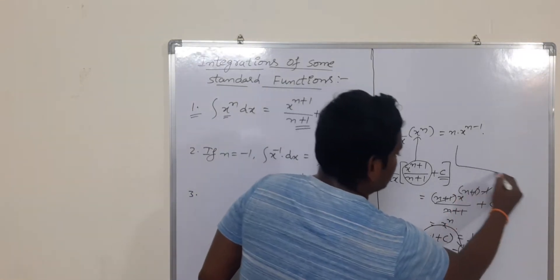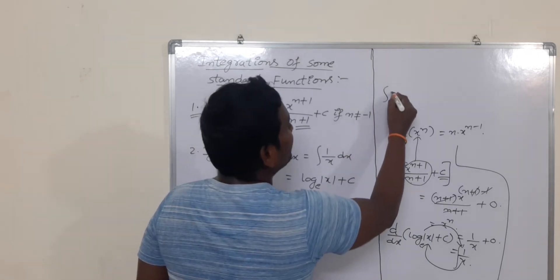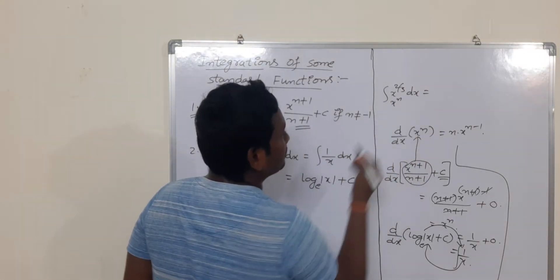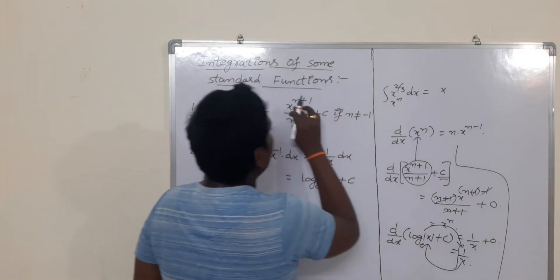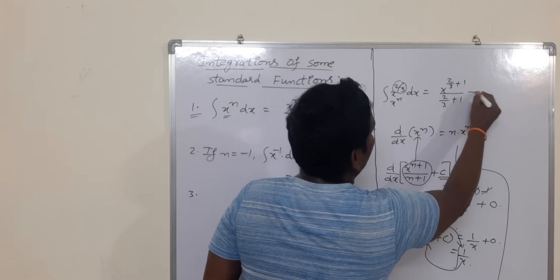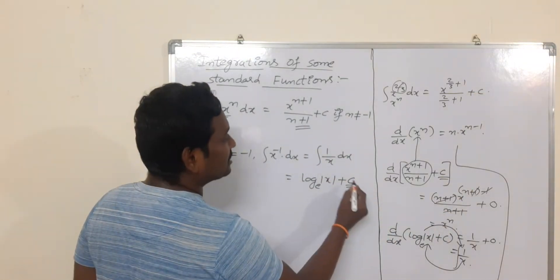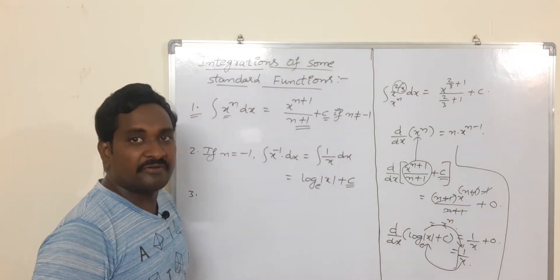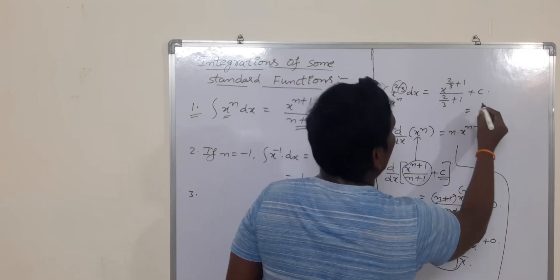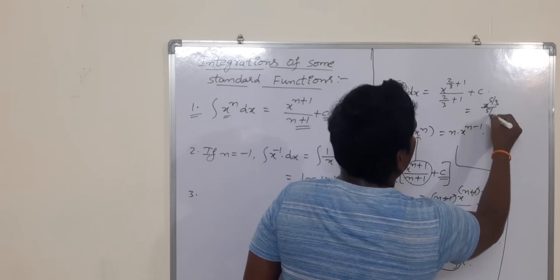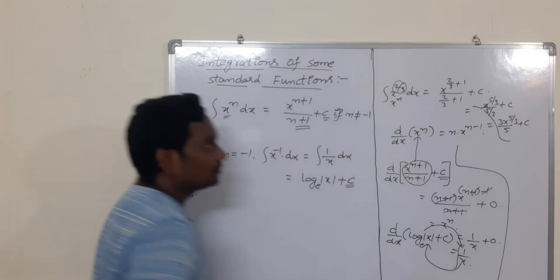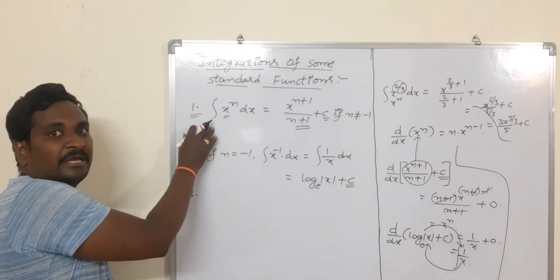This first formula is very important and can be applied in many problems. For example, find integration of x^(2/3). This is in the form of x^n, so apply the formula: x^(n+1)/(n+1) + c. Here n = 2/3, so n+1 = 2/3 + 1 = 5/3. Taking LCM, 2 plus 3 equals 5. So you get x^(5/3) divided by 5/3, plus c, which can be written as 3x^(5/3)/5 + c.